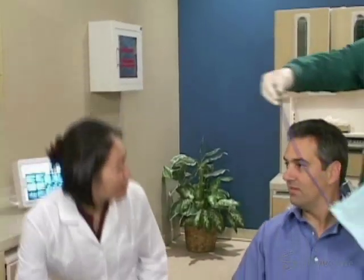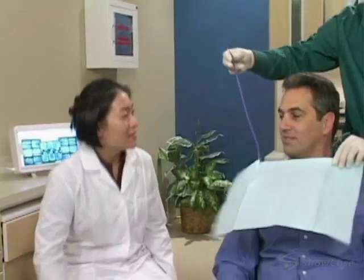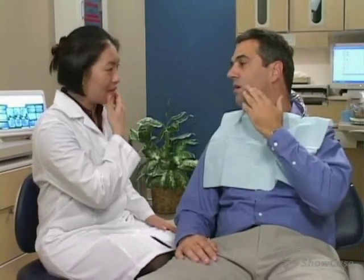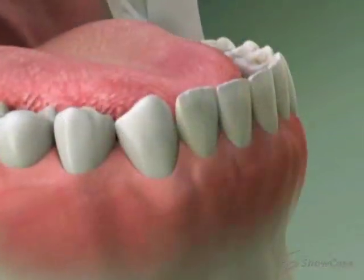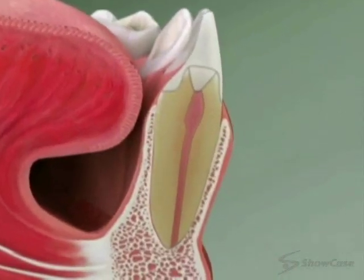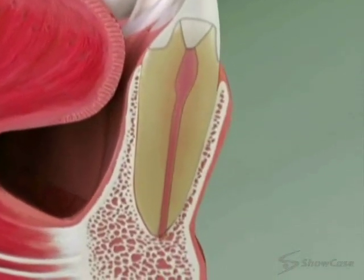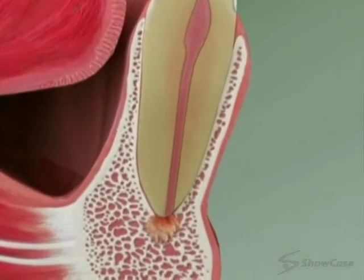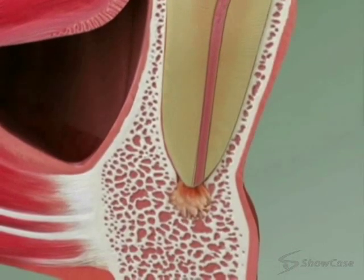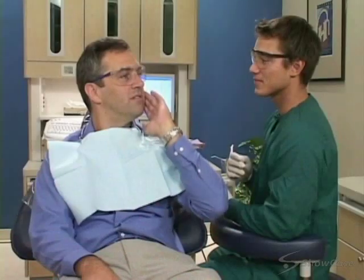An apicoectomy is a minor surgical procedure that's necessary when root canal therapy hasn't completely healed an infected tooth. Even after root canal therapy, infection may sometimes continue to grow at the tip of the tooth root, where it can dissolve jawbone and form a painful abscess.